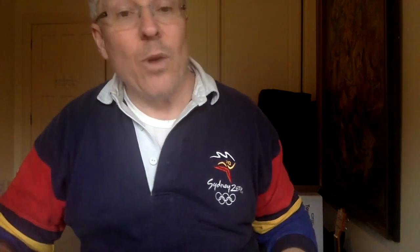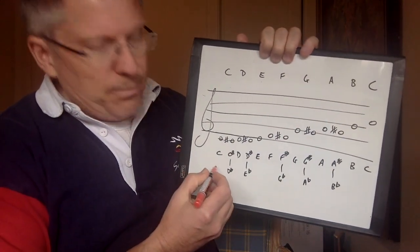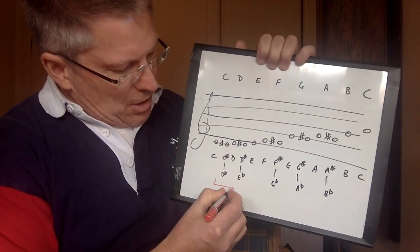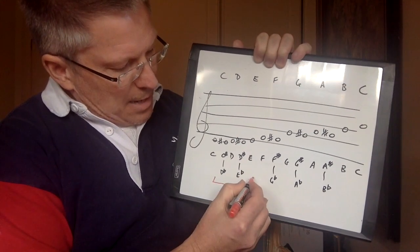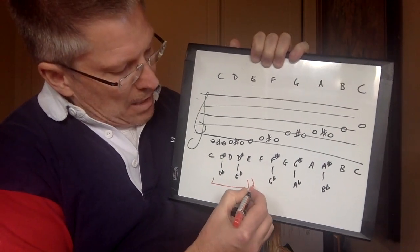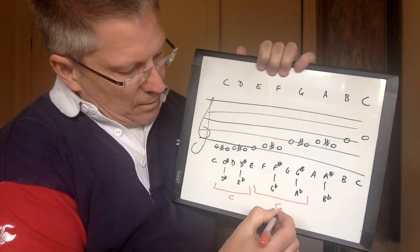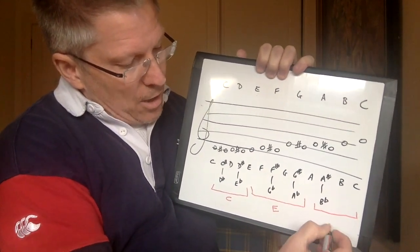We can play the chromatic scale on one string as we did last week, or we can move across the strings and use all of them. On the C string we can play C, C sharp, D, and D sharp before we run into E. Then we start playing on the E string: E, F, F sharp, G, G sharp. Then because we run into A next and we've got an open A string, we play those on the open A string.